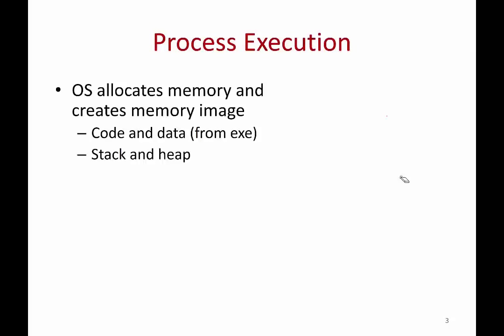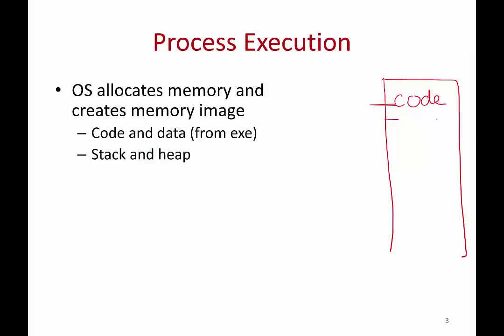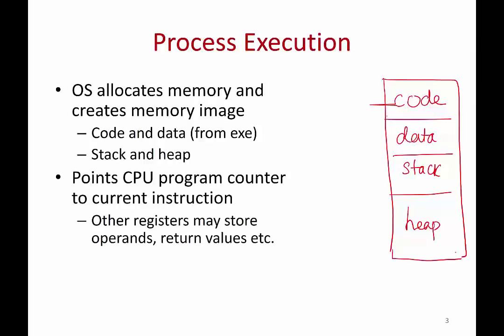What happens during process execution? The first thing that the operating system does is it creates the memory image of a process. What's in the memory image? You have the code, you have data, you have the stack, you have the heap and so on. Then the operating system sets up registers in the CPU — like the program counter — to point to some part of the code, and the stack pointer is pointing to the current position in the stack. All of these are set up.